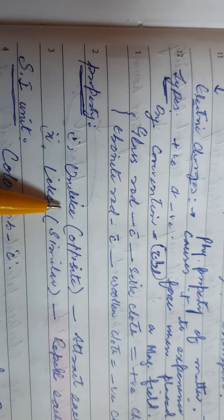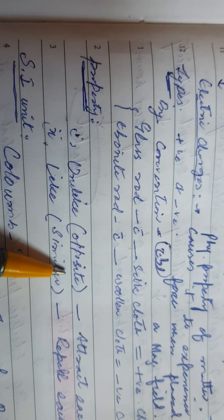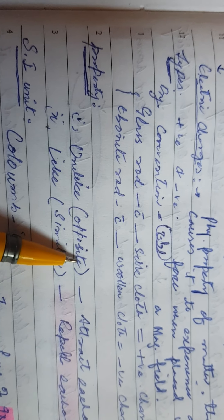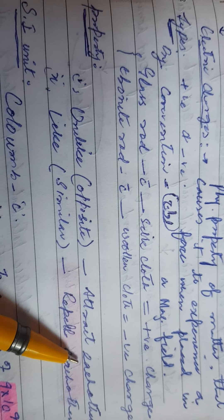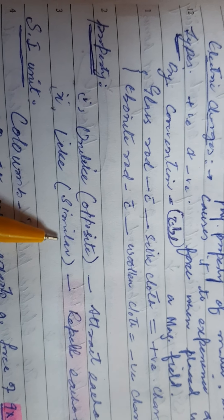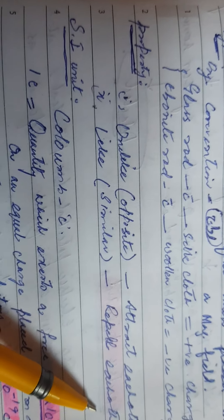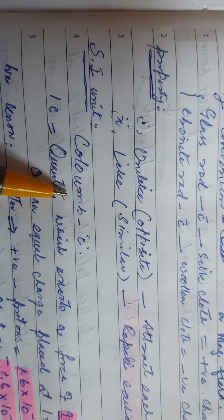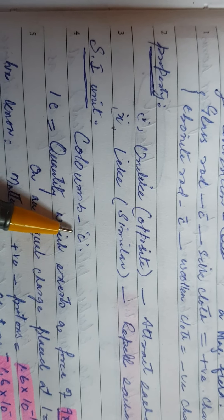The properties of electric charges: number one — unlike or opposite charges attract each other. Number two — like or similar charges repel each other. The SI unit of electric charge is the coulomb, and it is written as C.